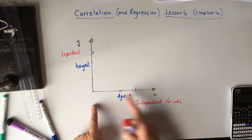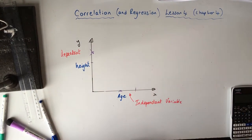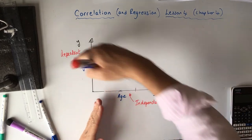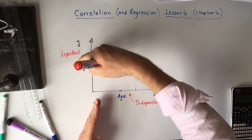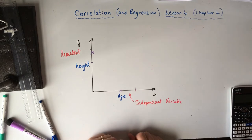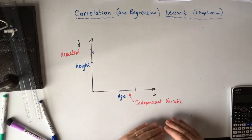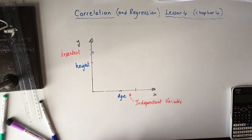The tree isn't getting older because it's getting taller — the tree is getting taller because it's getting older. So age is the leading variable, it's causing the height to increase, not the other way around. You need to know about the independent variable and the dependent variable.